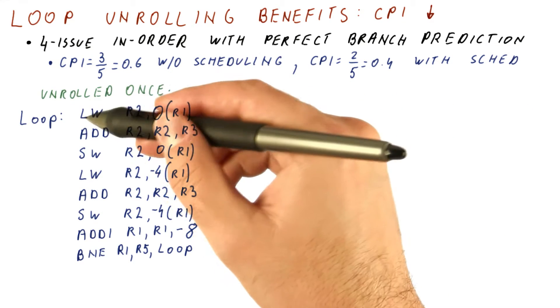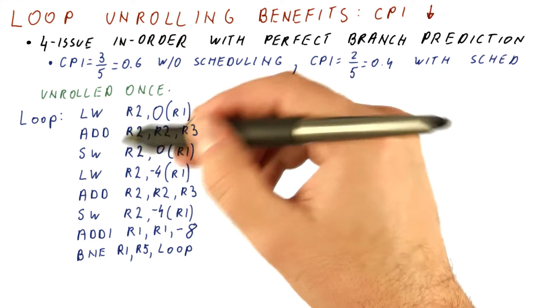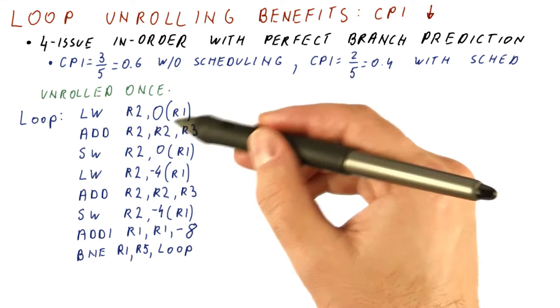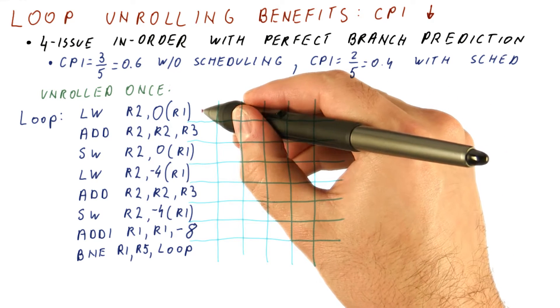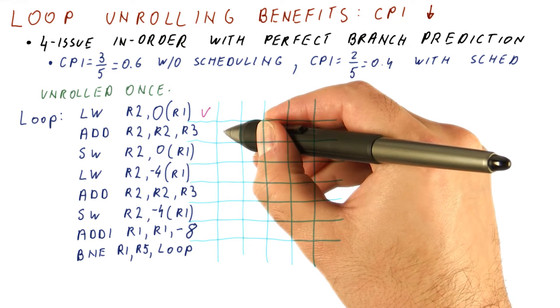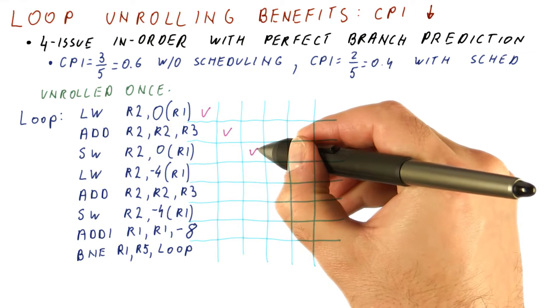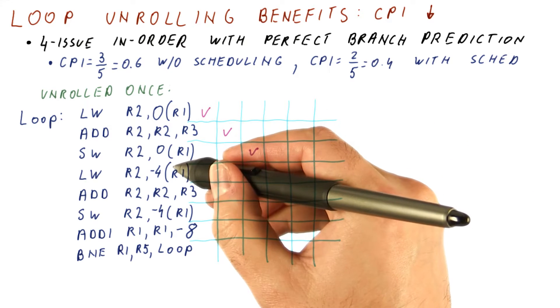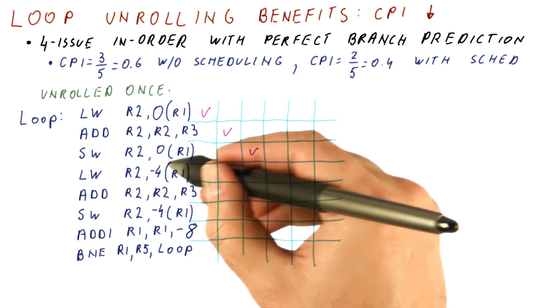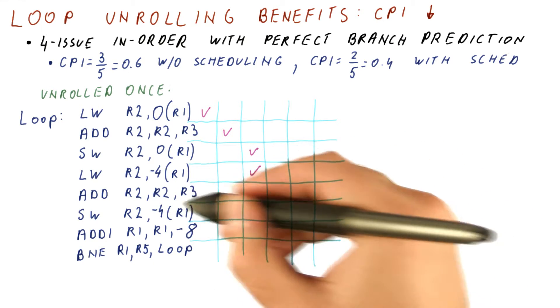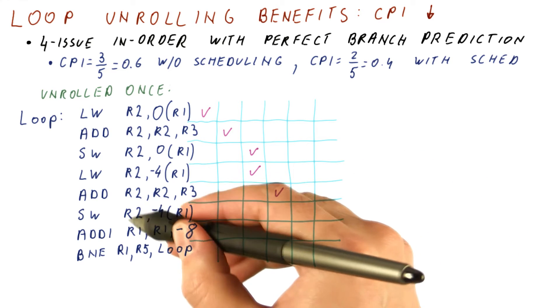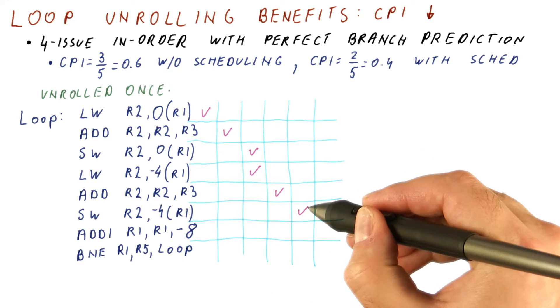Now let's see what happens when we unroll the loop once and try to execute it on this processor. This is the code we constructed, and now what happens in this loop is we do the load, the add has to wait for that result, the store has to wait for that. This load is going to a different memory element, so it can proceed in parallel with the store. The add, however, has to wait for that load, and then this store has to wait for that add.